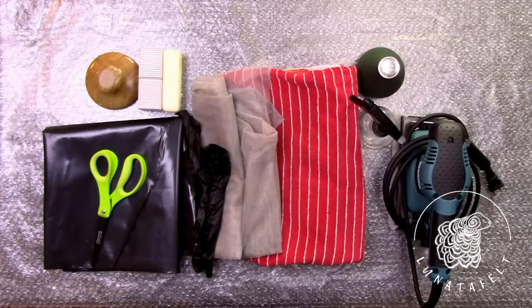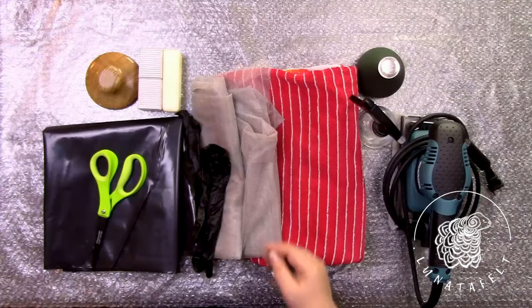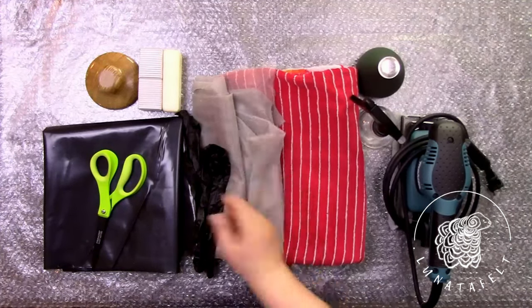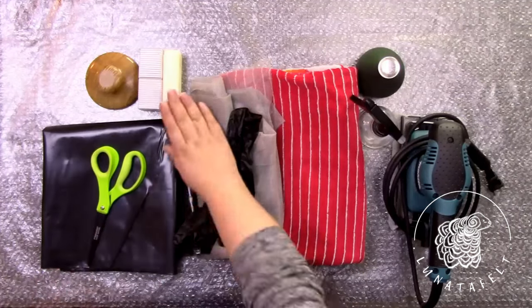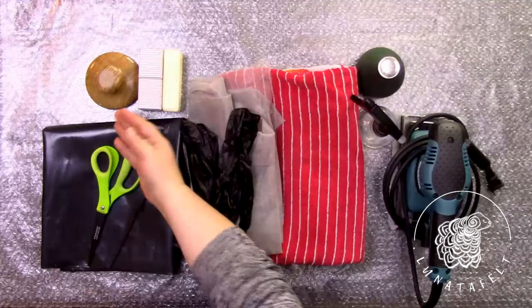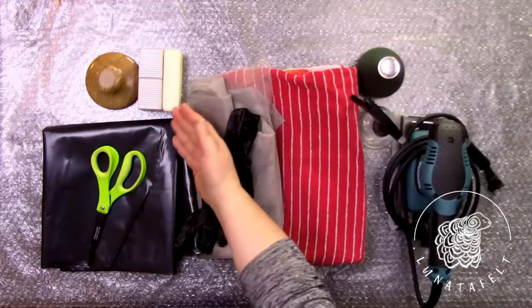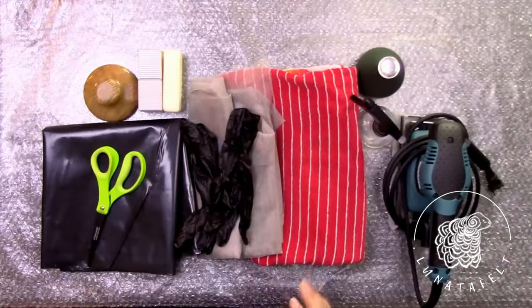For felting, you will need a standard set of tools: a terry towel, mosquito netting, vinyl gloves, thick gardening film, sharp scissors, hard soap, a water spray bottle, a wooden or ceramic felting stone, a vibration sander, and bubble wrap as a table covering.